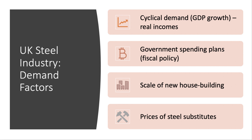What are the key factors affecting industry demand for steel in the UK? There is cyclical demand — you'd expect the demand for steel to rise and fall according to the economic cycle, a nice link between micro and macro. Government spending plans also have a big effect: if the government builds more hospitals, schools, or increases transport infrastructure and flood defence, that lifts demand for steel. The scale of new house building is also a factor, as is the price of substitutes for steel, such as engineered timber or metal composites.